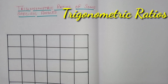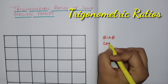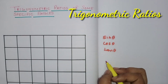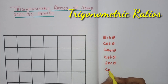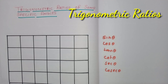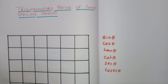How many trigonometric ratios are there? There are 6 trigonometric ratios: sin theta, cos theta, tan theta, cot theta, sec theta, and cosec theta. The trigonometric table helps us find the values of these 6 ratios at specific angles such as 0°, 30°, 45°, 60°, and 90°.